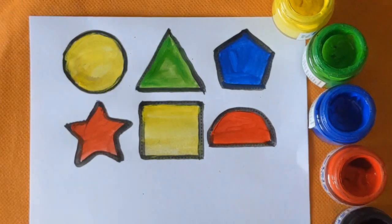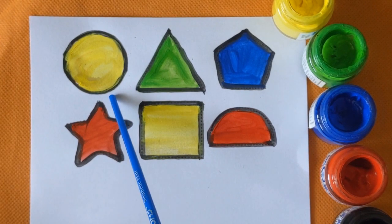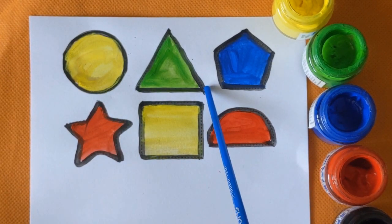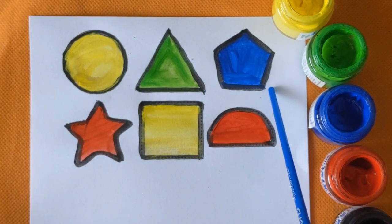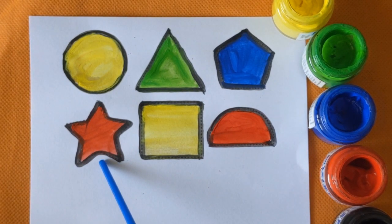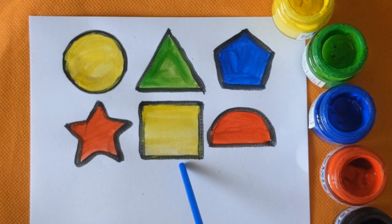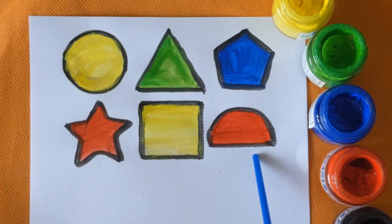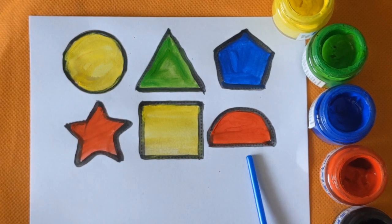Let's revise with me. This is circle shape. Yellow color. Triangle. Light green color. Pentagon. Blue color. It's a star shape with a red color. Square with a yellow color. And this one is semicircle with a red color.